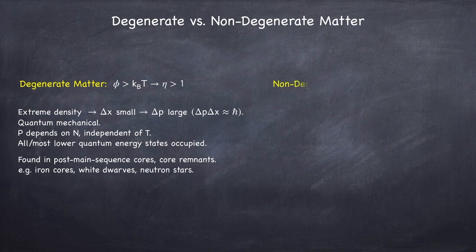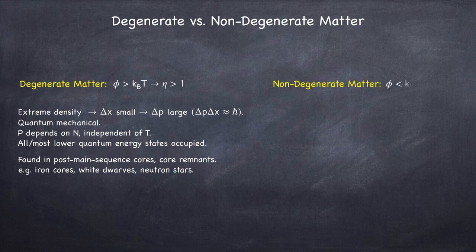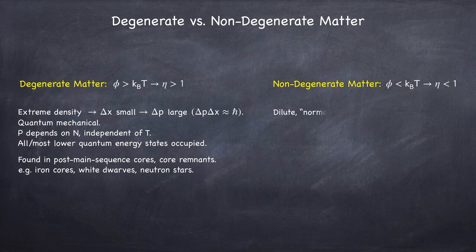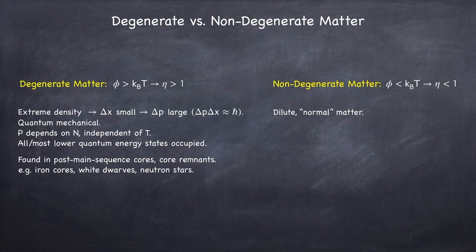Non-degenerate matter is when the chemical potential is less than the temperature. So when eta is less than 1. This type of matter is generally dilute, and it's what you would call normal matter. Meaning, it's the type of matter we experience as human beings every day.